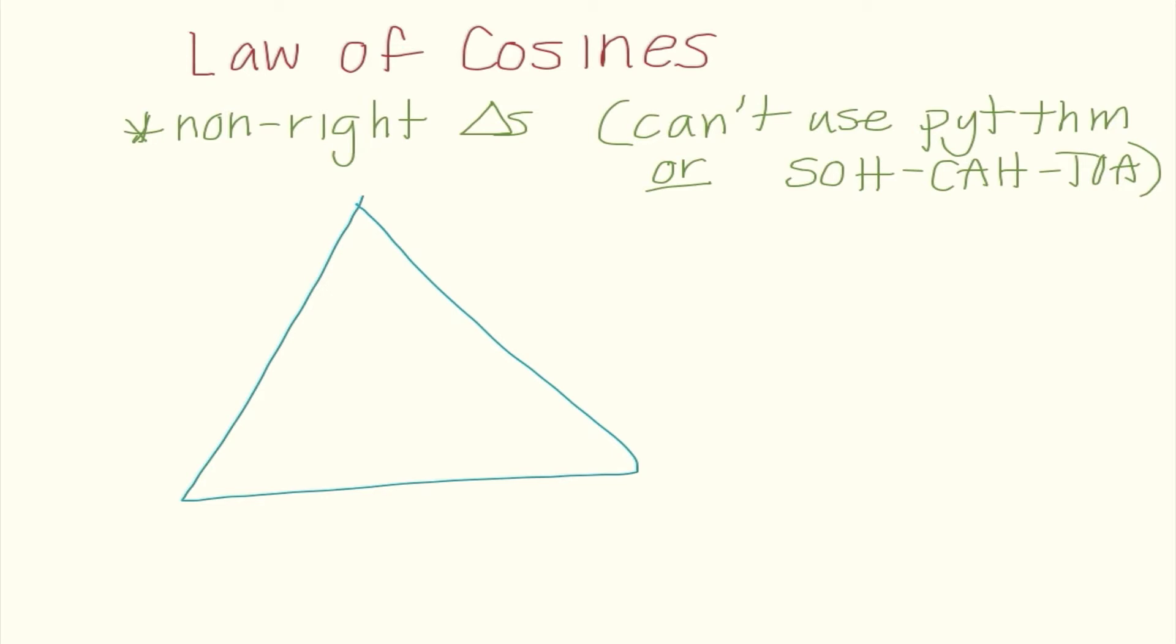And so we cannot use Pythagorean Theorem or use SOHCAHTOA. And the reason is we don't have a hypotenuse, so these ratios no longer make sense for us. So just like we did in previous problems here, I know that capital letters represent our angles. And opposite from those angles, we have a lowercase letter that is exactly the same that represents the opposite side.